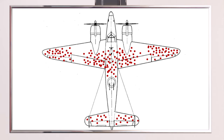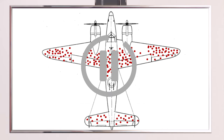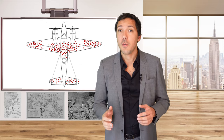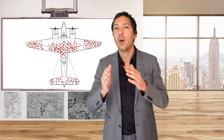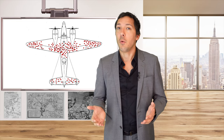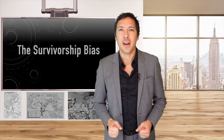Now the question is where would you put the armor? If you want, you can stop the video now and put your answer in the comment section below. If you responded the wings, the tail gunner, or down the center of the body — in other words the areas in red — you fell into a trap which is called the survivorship bias.